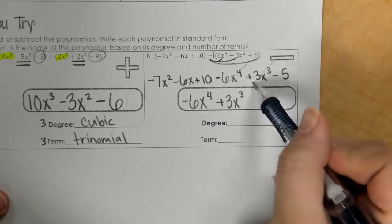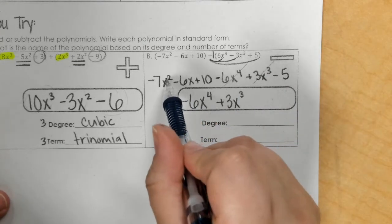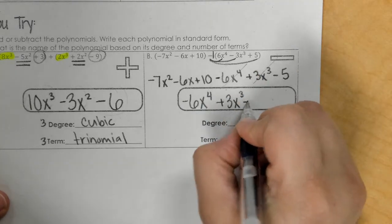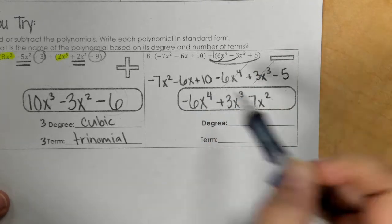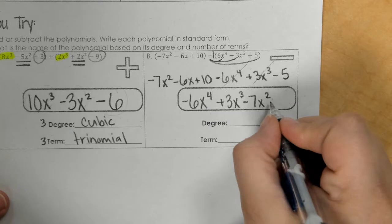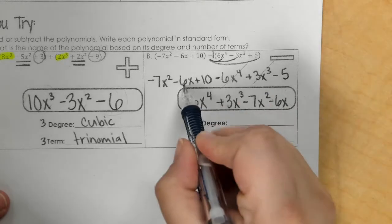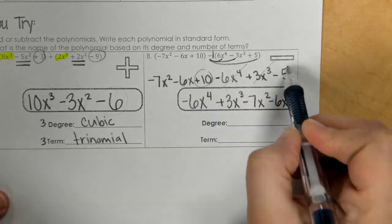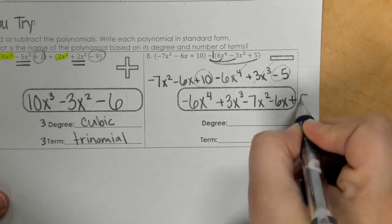Then x, and then lastly, 10 minus 5 is positive 5.